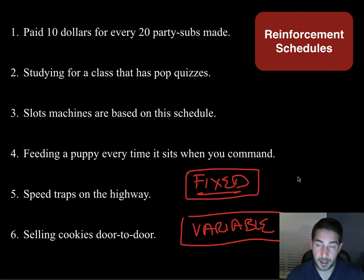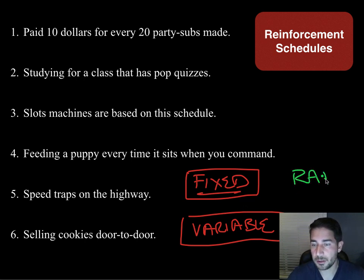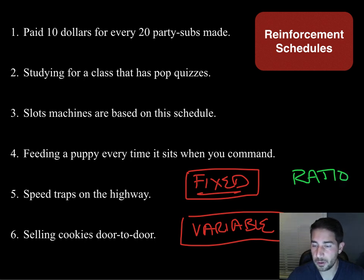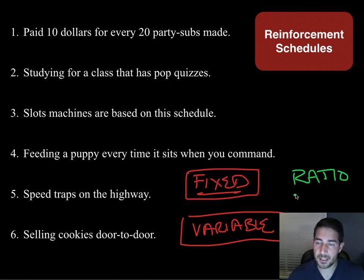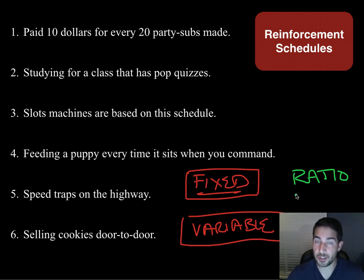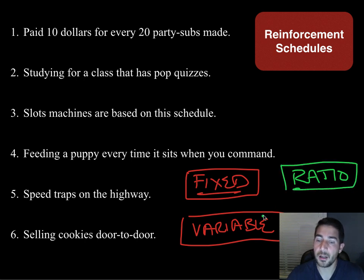So remember that. And then it's either going to be a ratio or an interval. Interval means time. Ratio means number. The thing to remember for ratio and interval is: does your behavior affect your chances of the reward? If your behavior affects it — the number of times you're doing something — then it's ratio. It can be fixed ratio or variable ratio, but you actually have to do something.